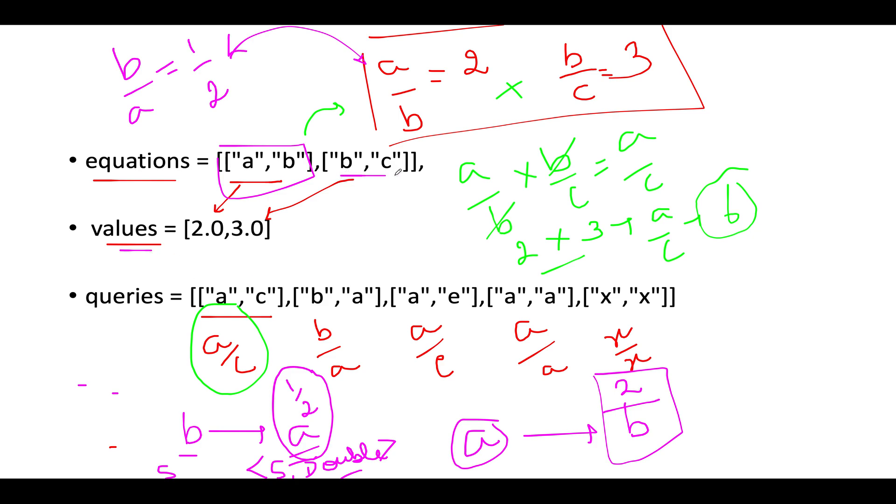Next we see B,C. Let's do the same thing. B/C equals 3, so a new connection is established. We'll store B/C equals 3 in the graph. Right now we have three nodes: A/B is 2, B/A is 1/2, and B/C is 3. We'll also store that C/B equals 1/3. This also makes sense.